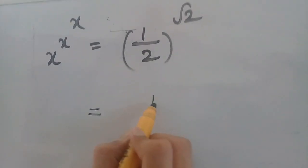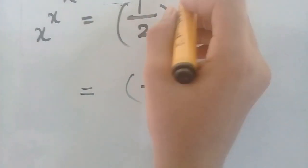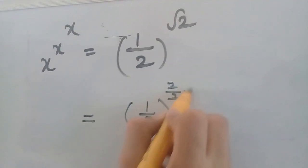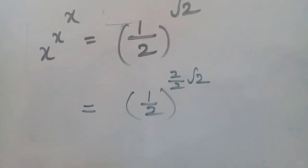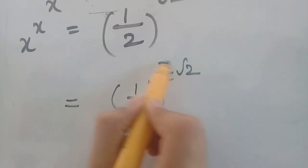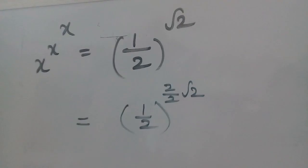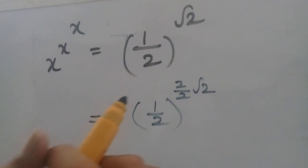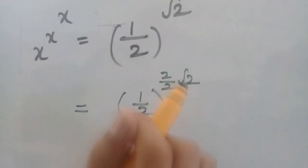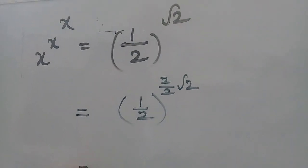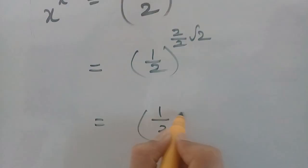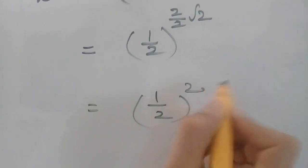Now 1 by 2 whole power root 2 — we can write root 2 as 2 by 2 root 2. We didn't do any change, but just wrote 1 root 2 as 2 by 2 root. So now that is equals to 1 by 2 whole square.